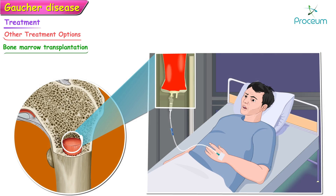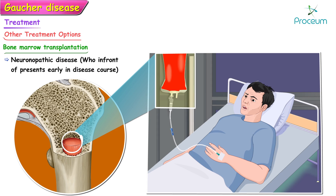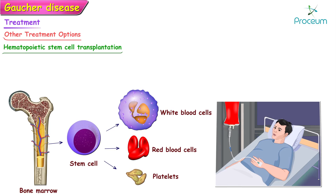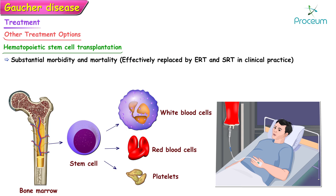Bone marrow transplantation may be considered in patients known to be at risk for neuronopathic disease who present early in the disease course. Hematopoietic stem cell transplantation can provide a definitive cure for Gaucher's disease; however, this procedure is associated with substantial morbidity and mortality and has been effectively replaced by enzyme replacement therapy and substrate reduction therapy in clinical practice.